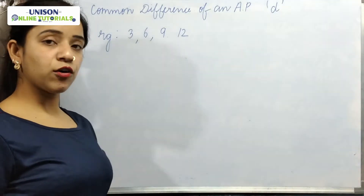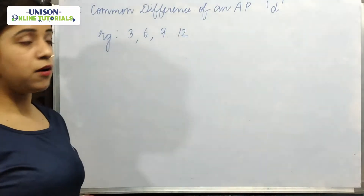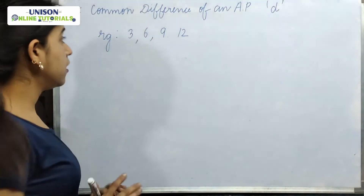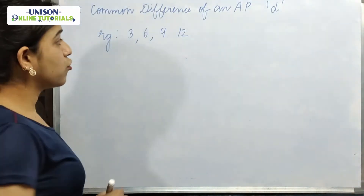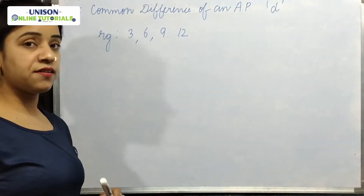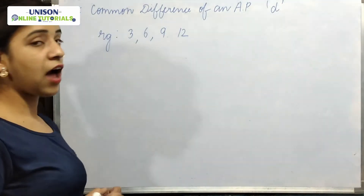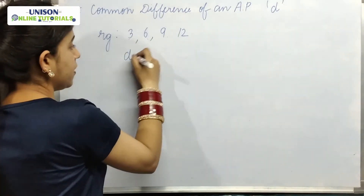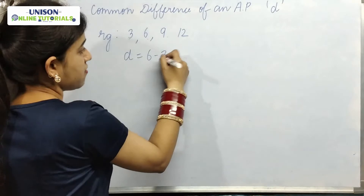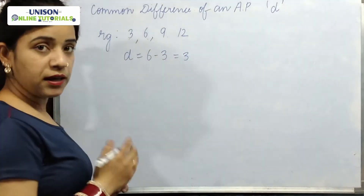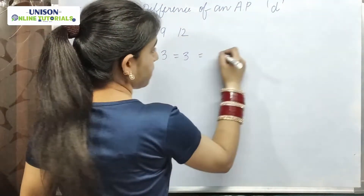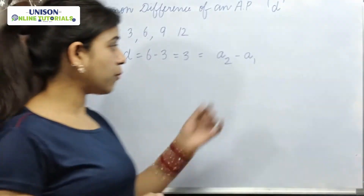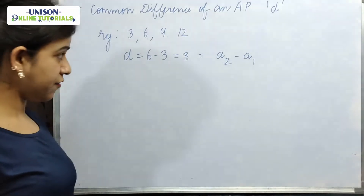Now we will study what is the common difference of an AP. The common difference of an AP is denoted by d (small d). Taking an example: 3, 6, 9, 12. This is an AP. We have to find its common difference. Common difference is 6 minus 3 equals 3. Simply, when we subtract the first term of an AP from the second term, we get the common difference.